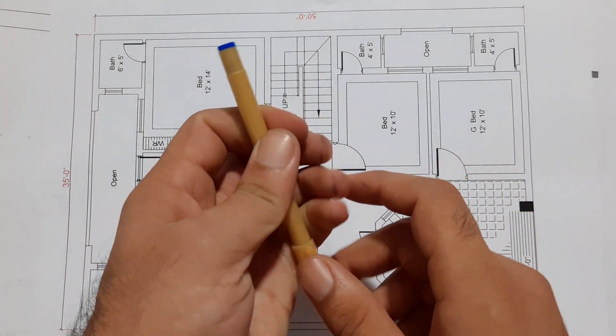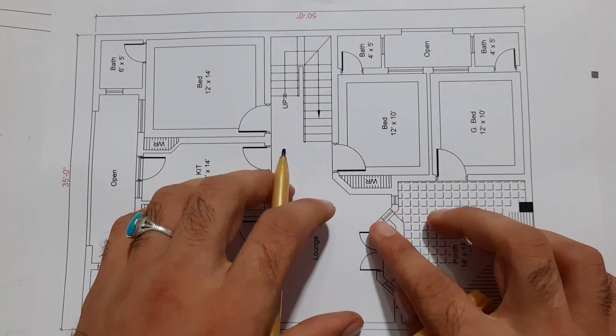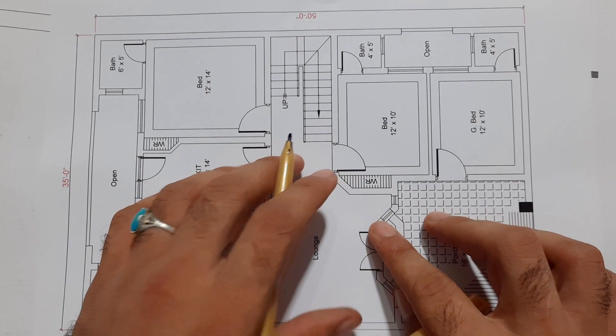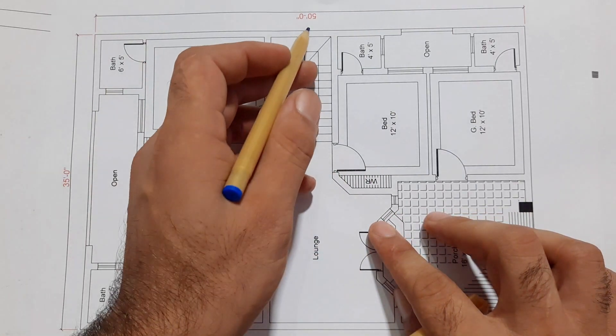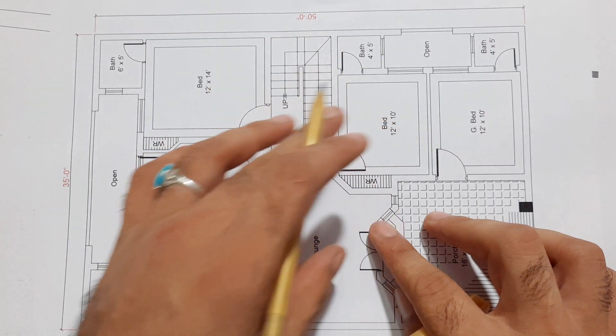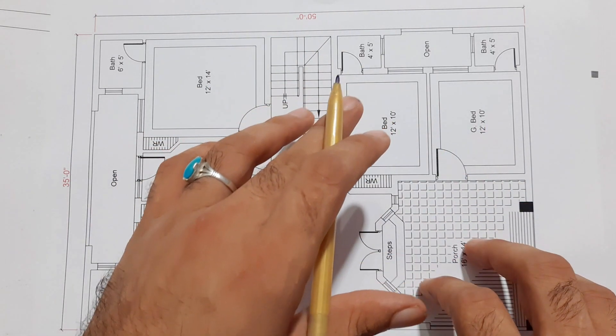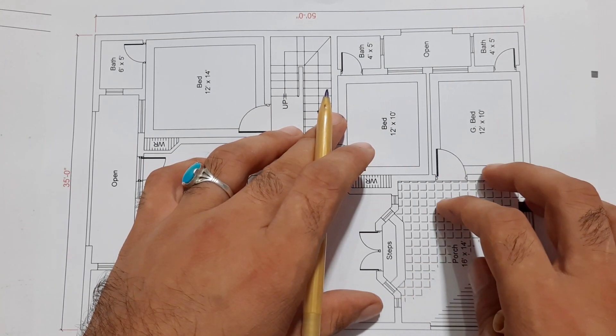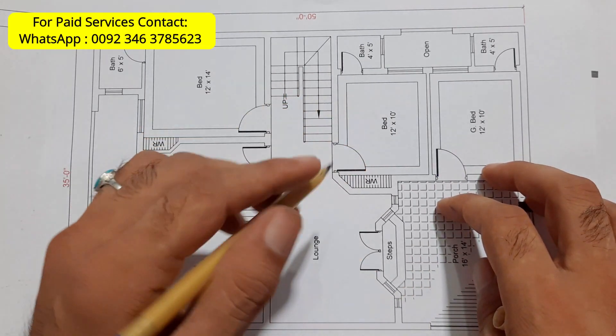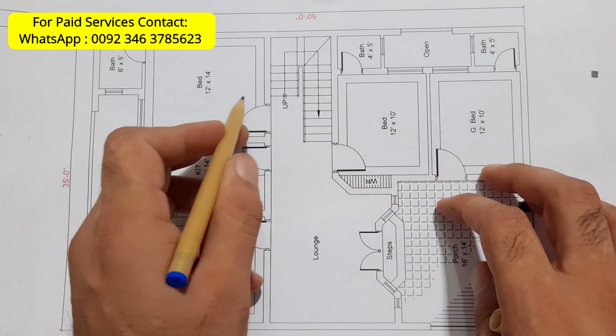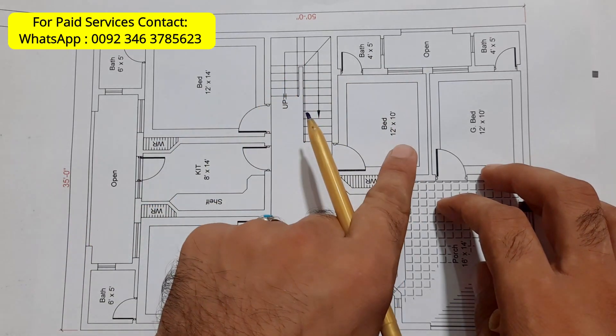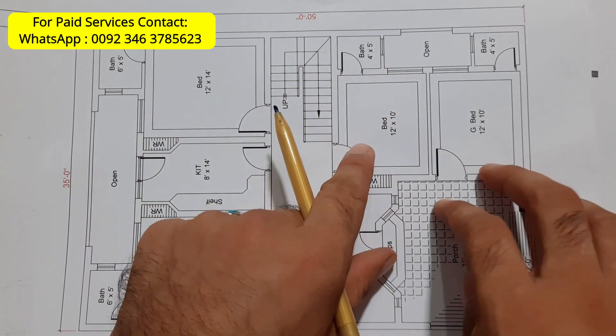Assalamualaikum beautiful people. Today in this important video lecture I will discuss a house plan in the dimensions of 35 by 50 feet. I designed this house plan for one of my clients. This is the ground floor plan. If you need house planning, structure design, or 3D animation, you can contact me on this WhatsApp number, but not for free - this is a paid service.